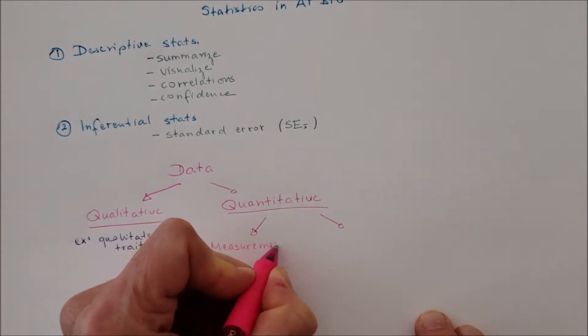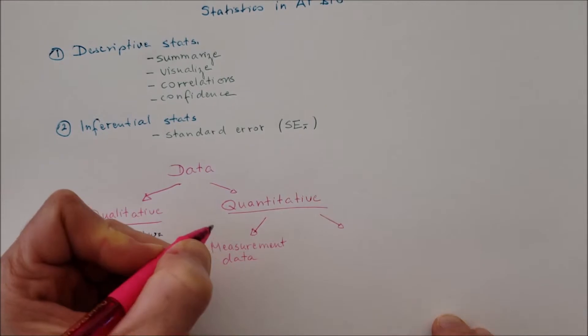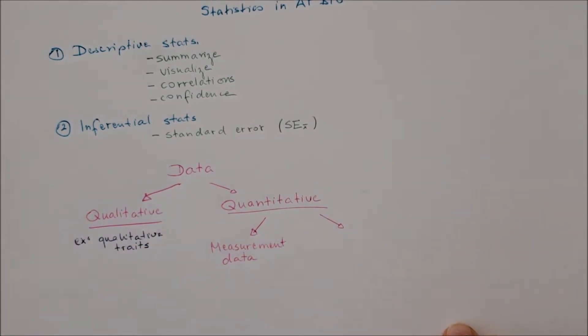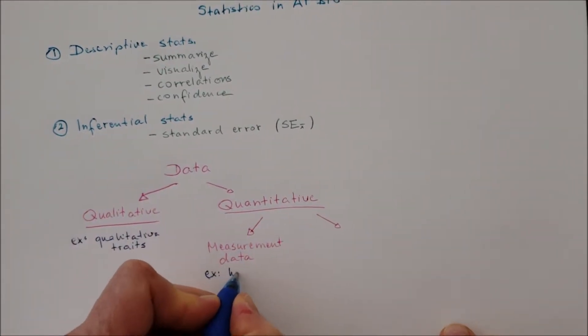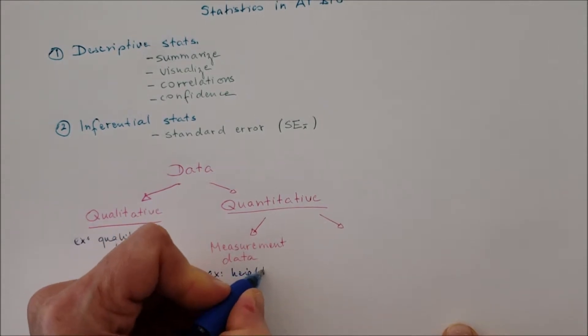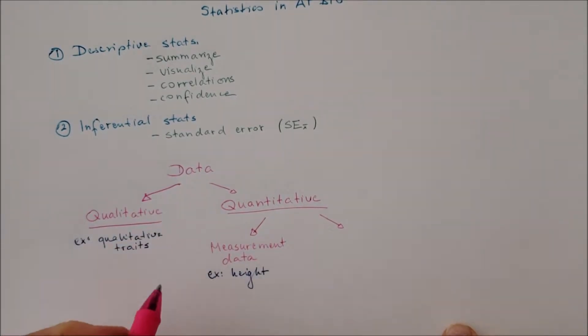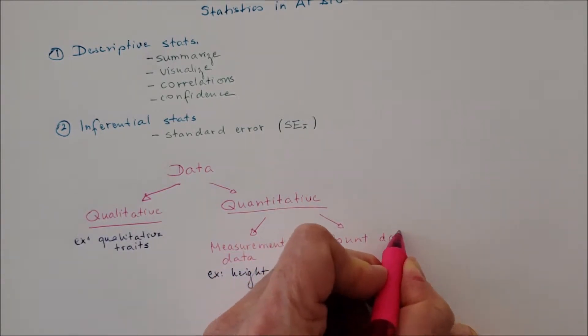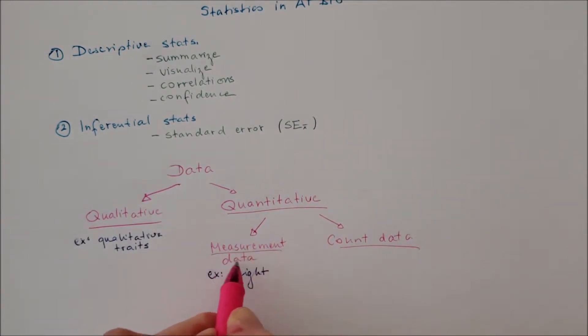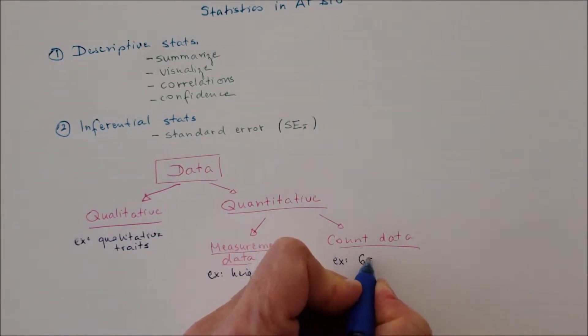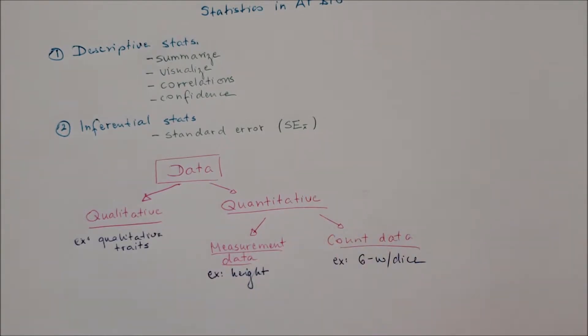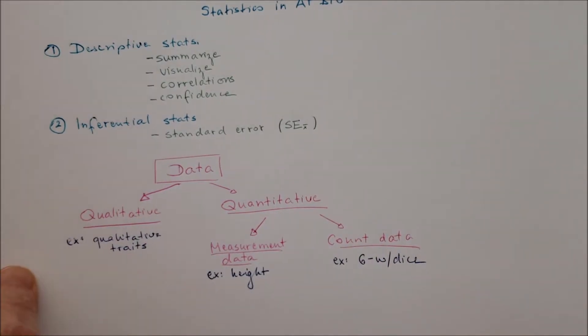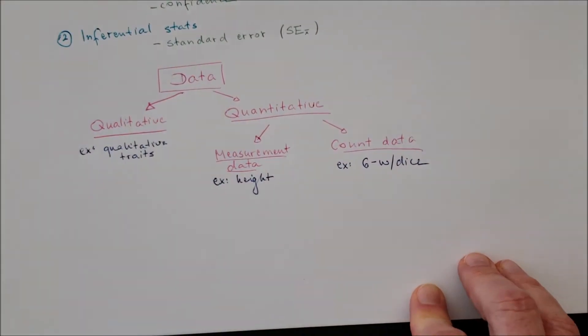Quantitative measuring can be measurement data. Example for that is the height of the students, or the continuous dependent and independent variable values. And count data is, for example, how many heads are from flipping a penny or how many times you can throw fives with a dice.